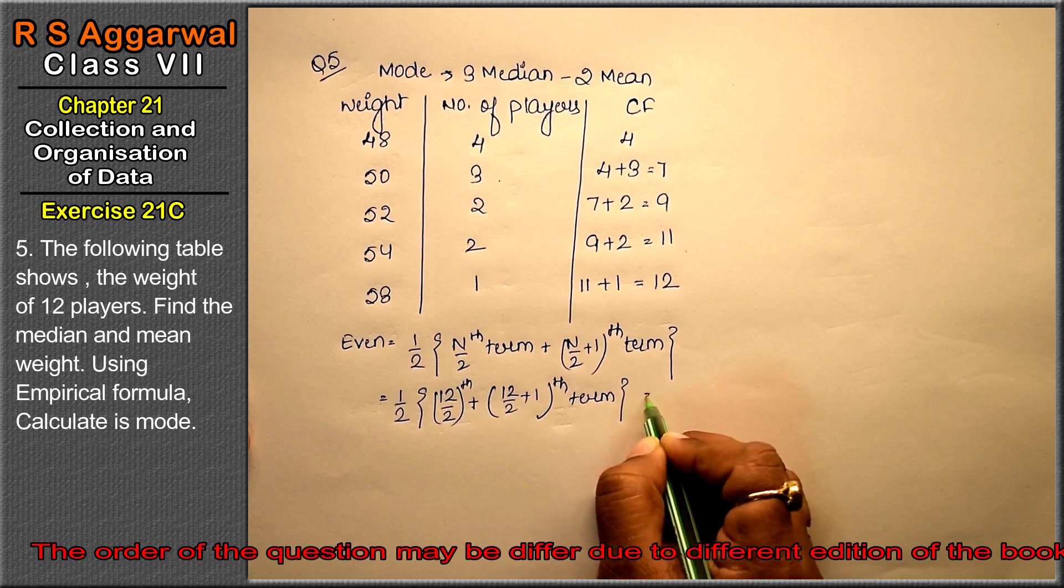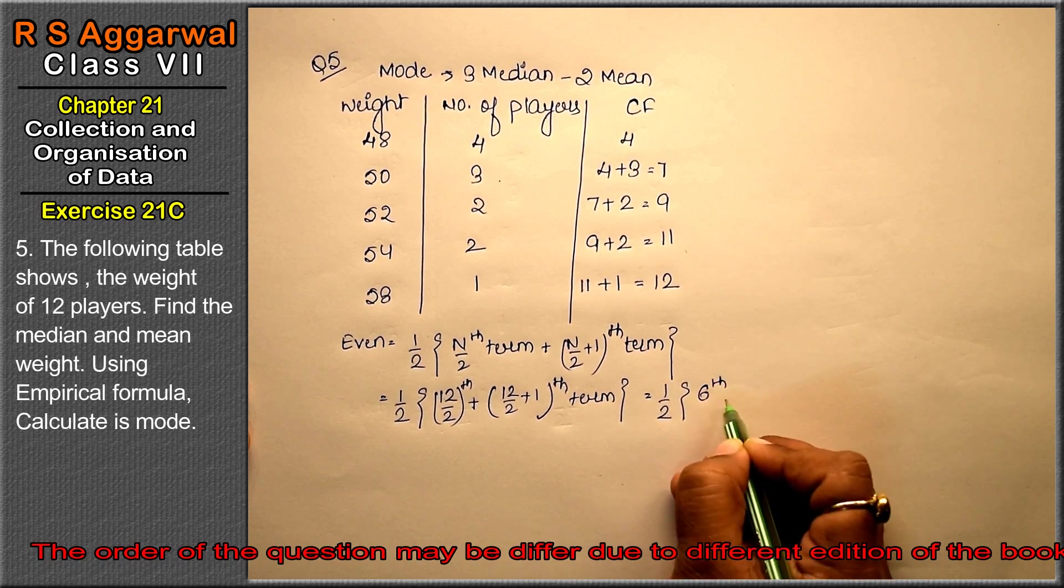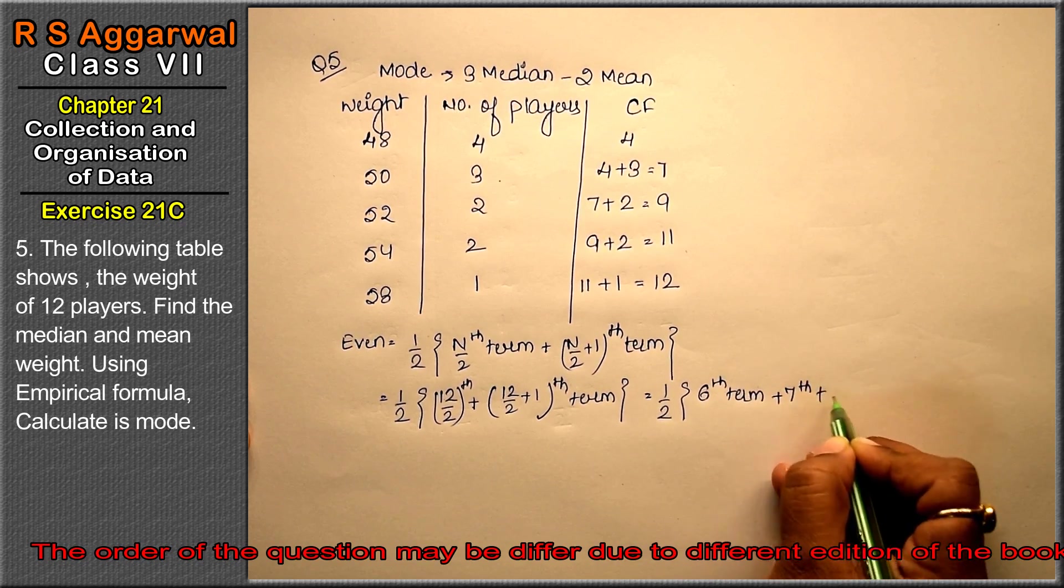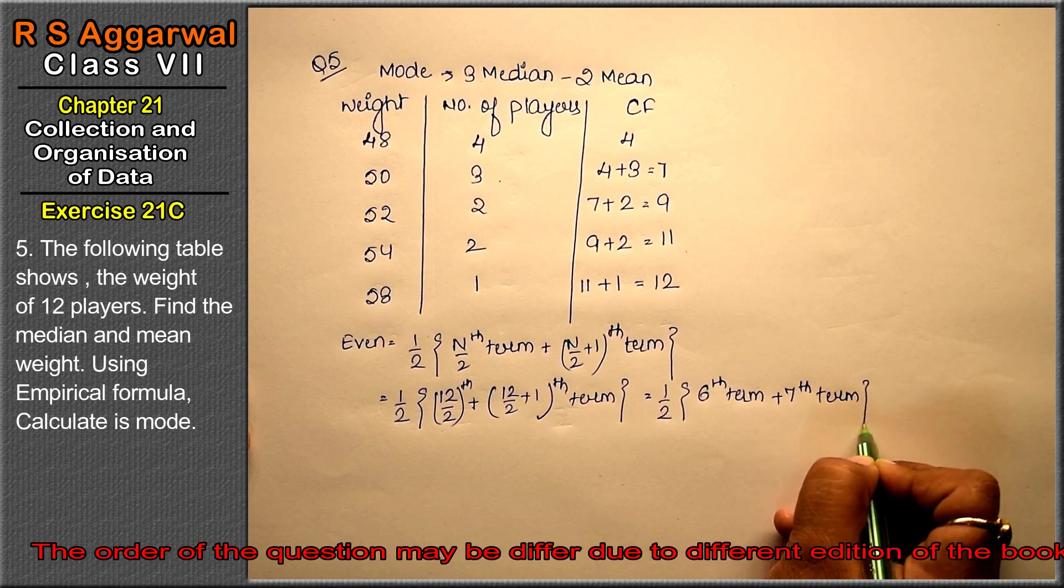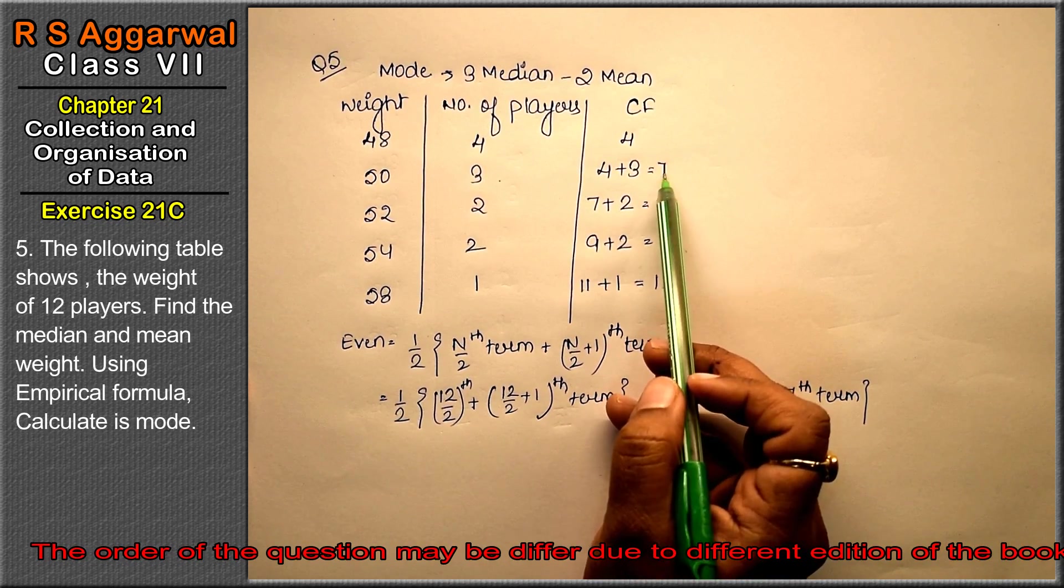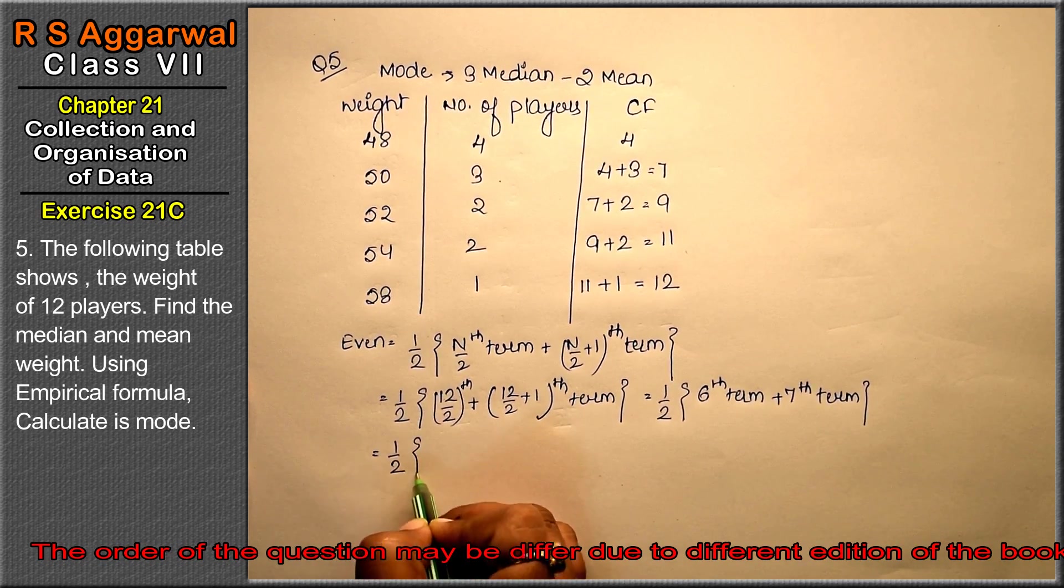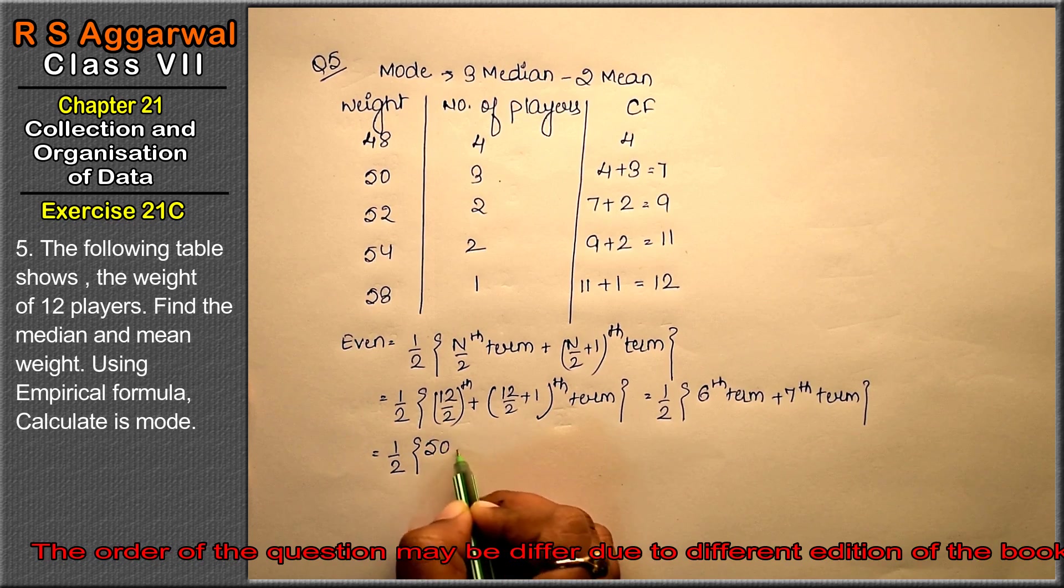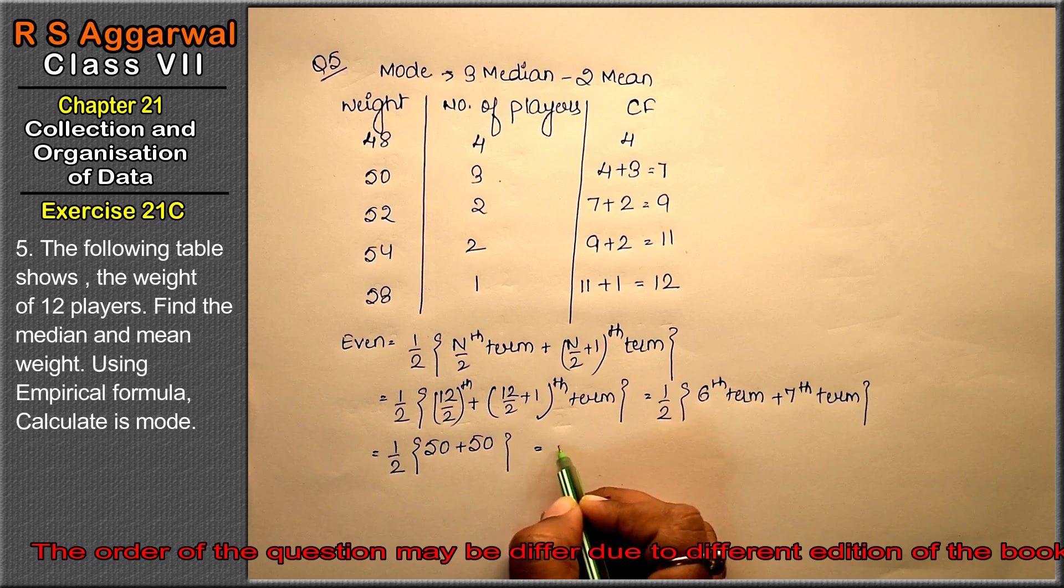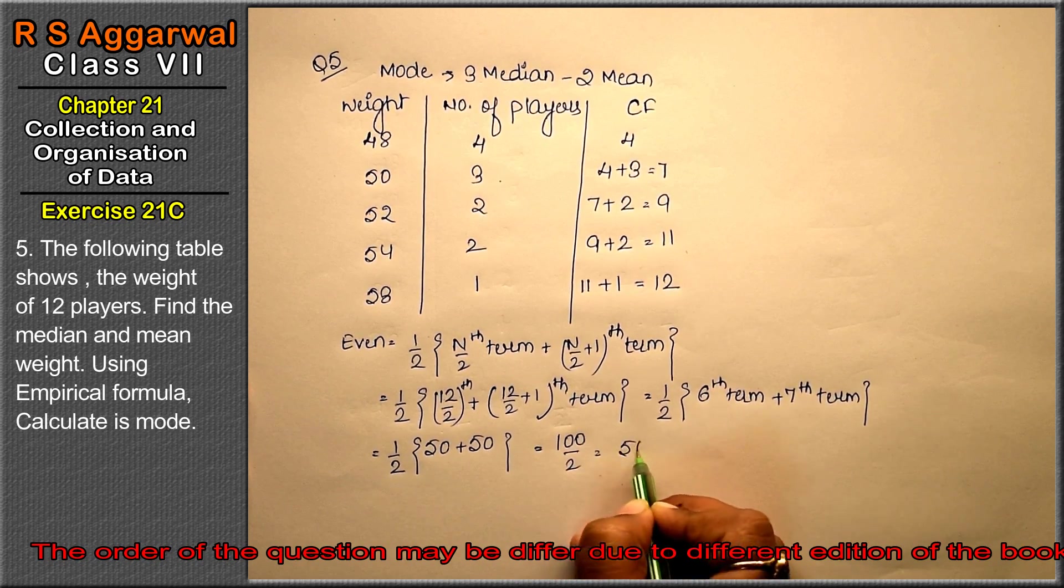This is half of 6th term plus 7th term. 6 and 7, where do they fall? They fall in the 50 line. So half into 50 plus 50, which equals 100 upon 2, that is 50 is the median.